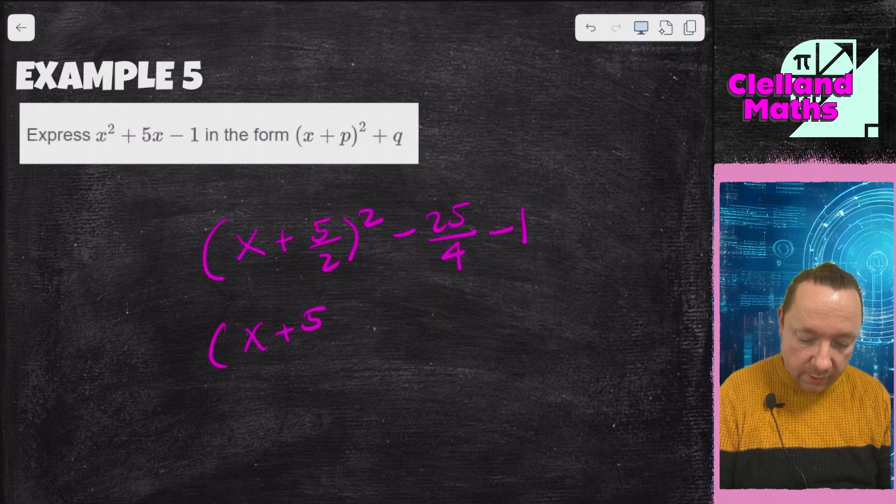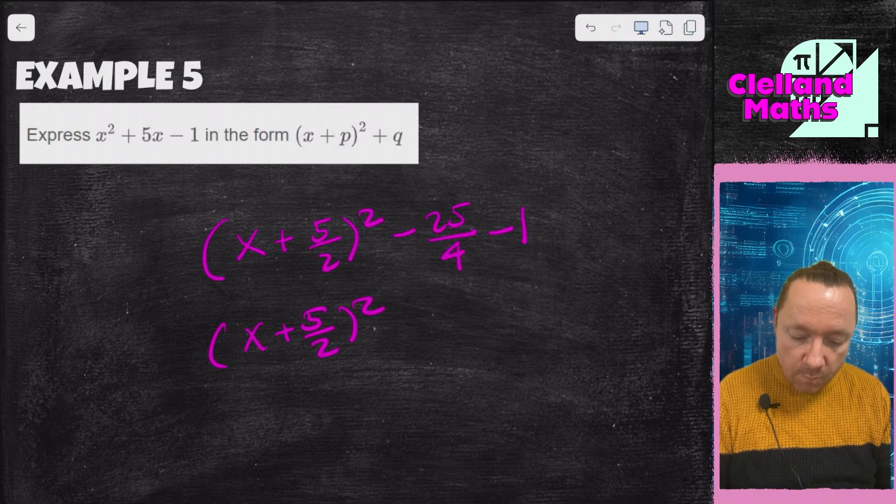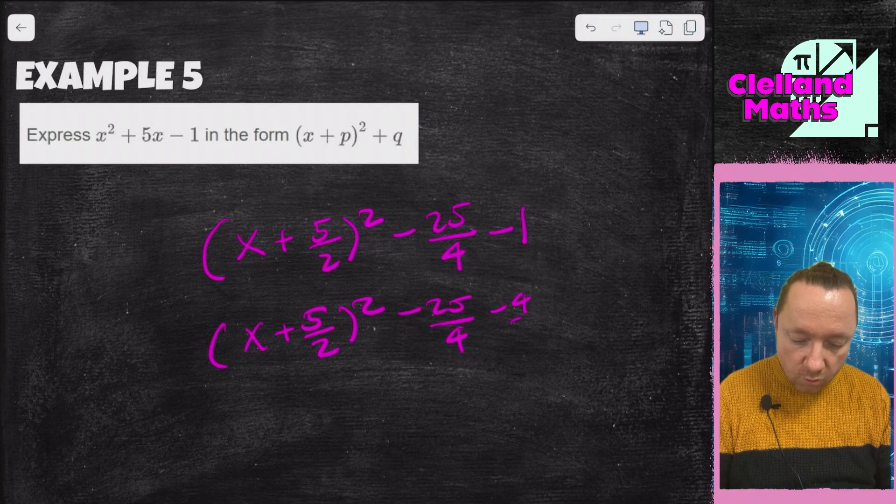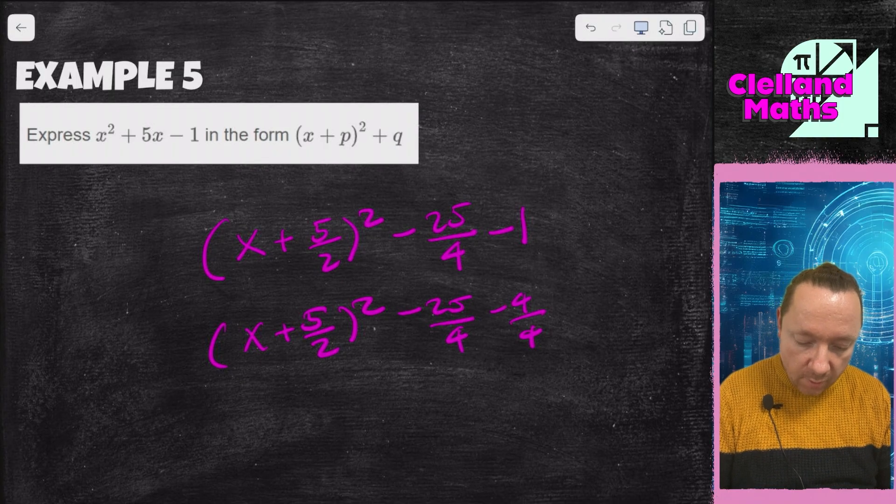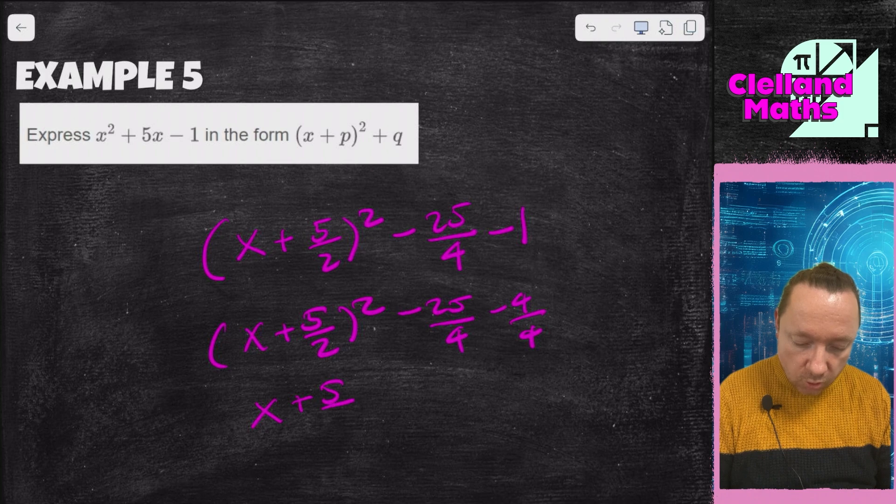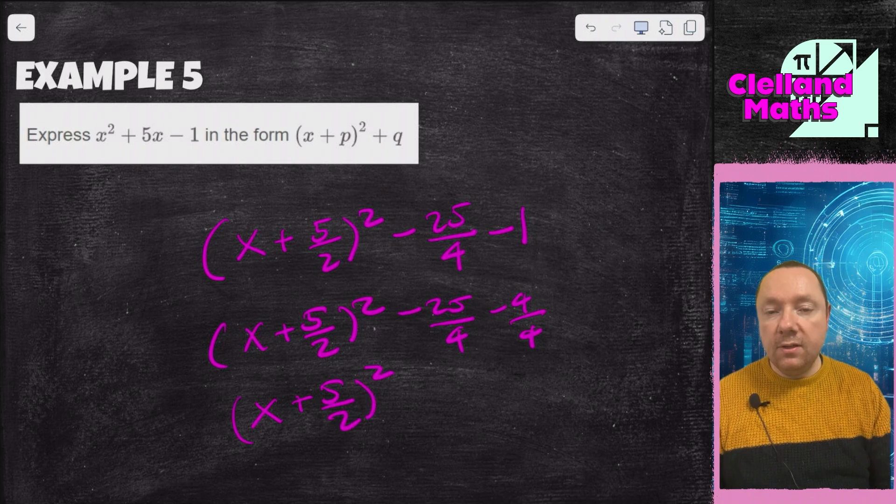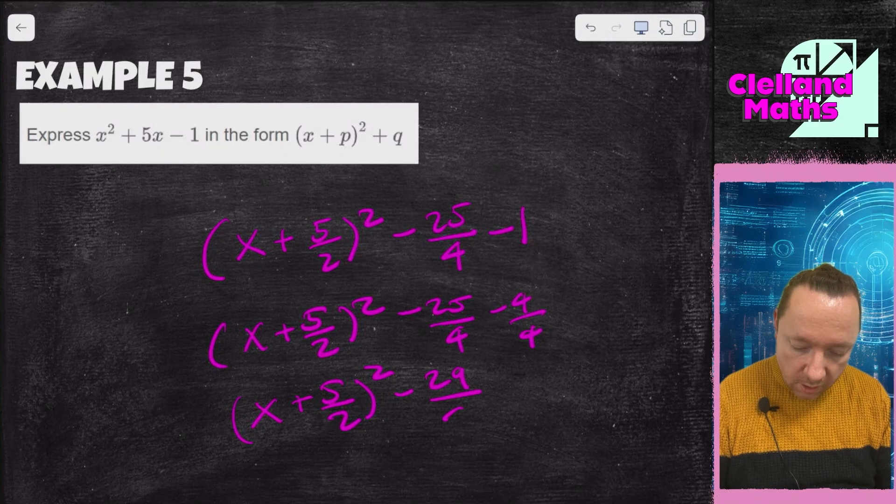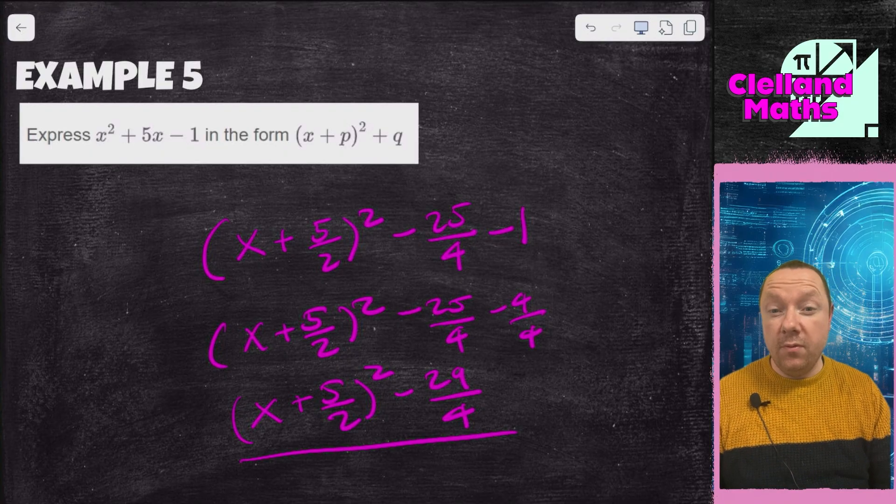I've got x plus 5 over 2 squared, minus 25 over 4, and then the same denominator 4 over 4. So that'll be x plus 5 over 2 all squared, minus 25 minus 4 is minus 29 over 4. Or you could leave that as decimals if you prefer.